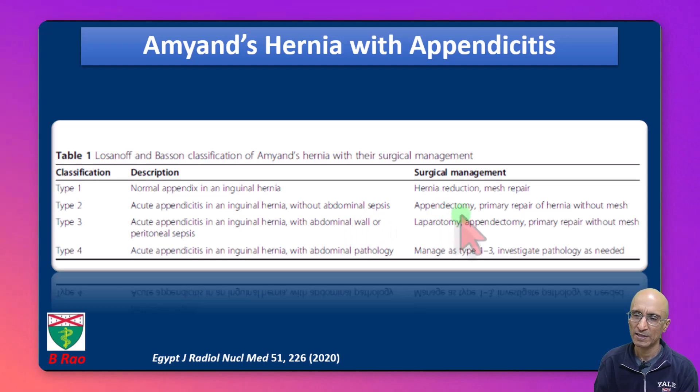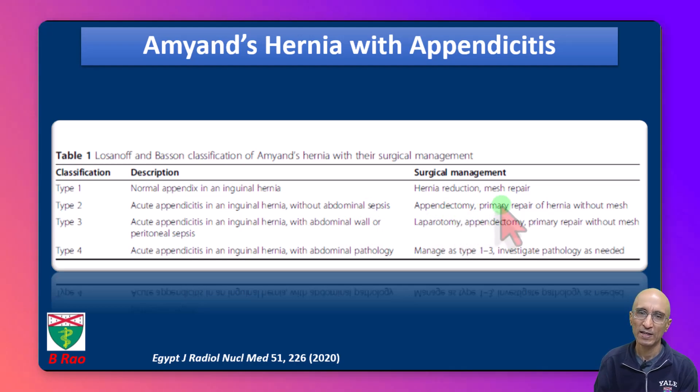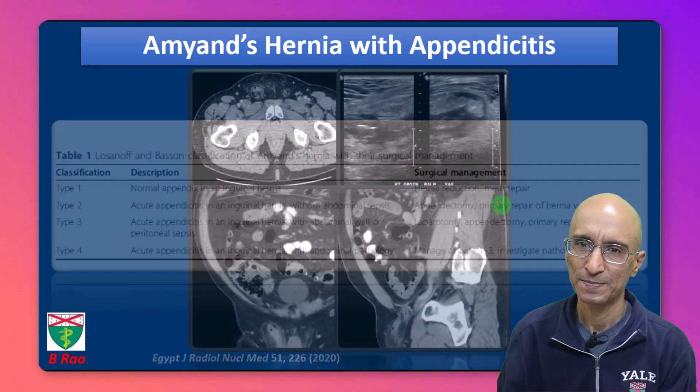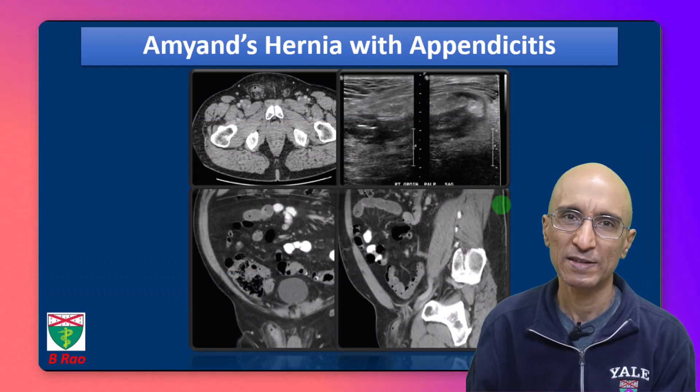Our patient had Type 2 Amyand's hernia with acute appendicitis but without abdominal sepsis, and underwent appendectomy with repair of the inguinal hernia. I hope you found this case to be interesting and informative. Thanks for your attention.